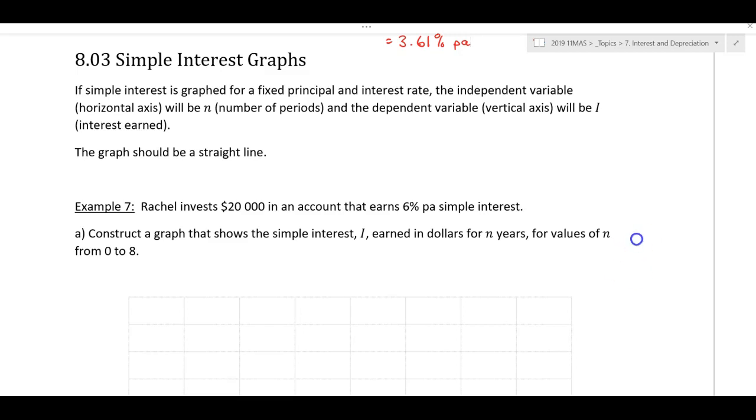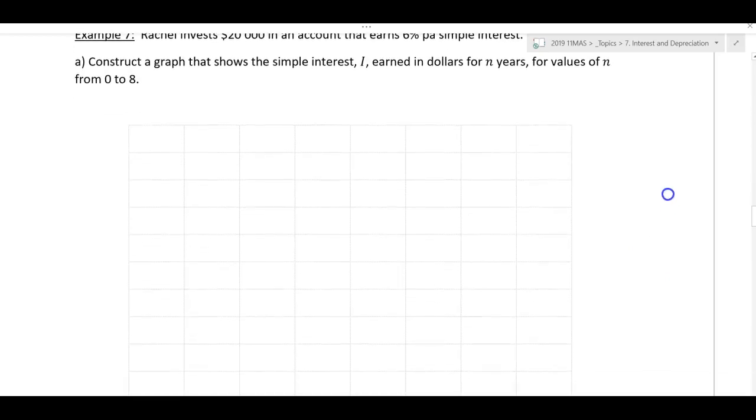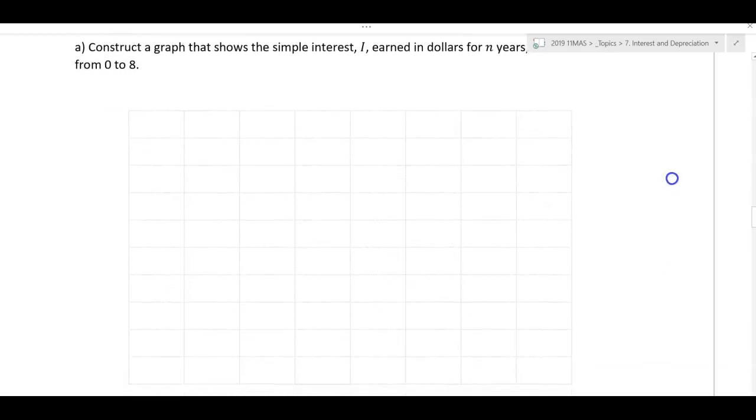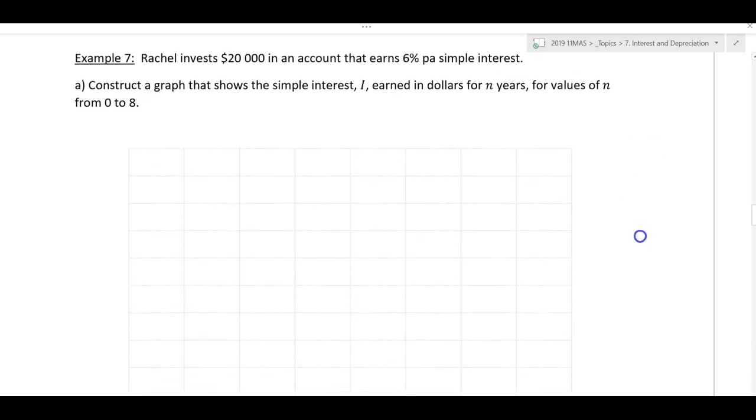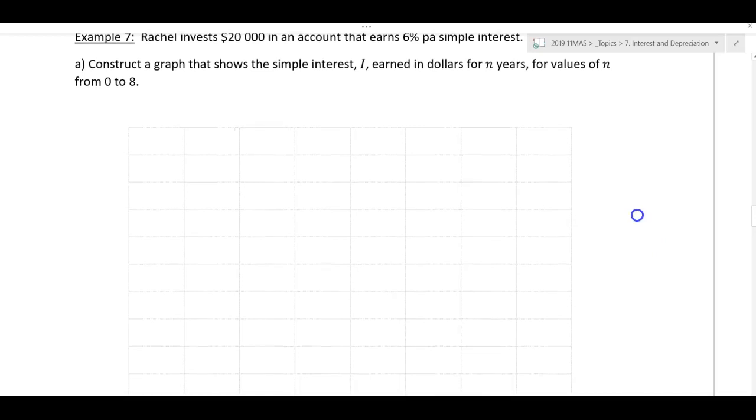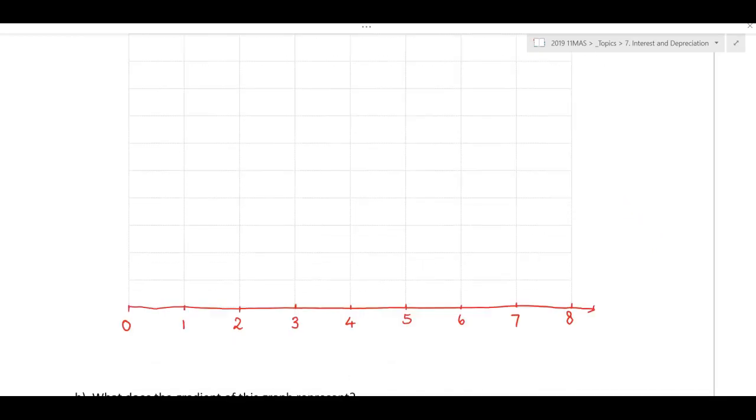So let's have a look here. Rachel invests $20,000 in an account at 6% per annum simple interest. Construct a graph that shows the simple interest earned in dollars for n years, from 0 to 8. Across my horizontal axis is going to be time, or number of periods from 0 to 8. Regular scale here, and I'm going to say n, that's my number of periods, and that's in years.